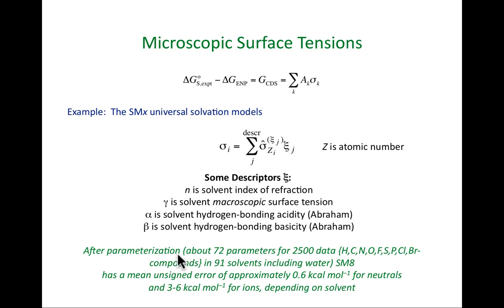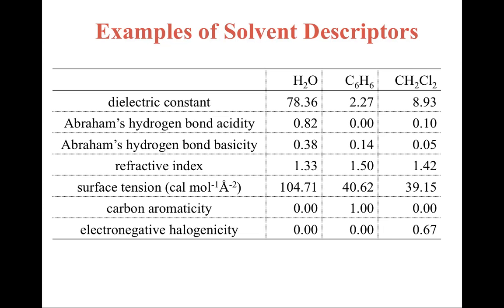And when you're all done with that, if you look at SM8, which was a relatively recent model from Minnesota for a generalized boron model, there's about 72 parameters for 2,500 data and 91 solvents, and there's a mean unsigned error of about 0.6 kcals per mole for neutral molecules, about 3 to 6 kcals per mole for ions, depending on solvent. So, that's within so-called chemical accuracy, right? Reaching 1 kcal per mole on something in a quantum calculation defines chemical accuracy. A little bit bigger for the ions. Mind you, getting an experimental value for an ion is a bit challenging. You don't do Henry's constant measurements. You have to do some mass spectral things, and that introduces reasonable uncertainty in the experimental values.